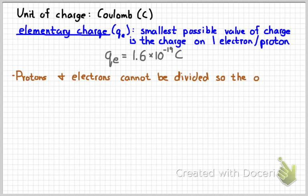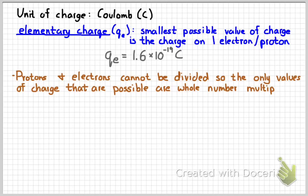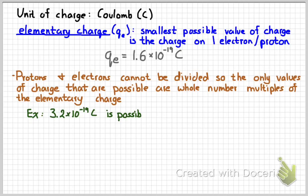Since protons and electrons cannot be divided, you can't have any value of charge that is not a whole number multiple of the elementary charge. For instance, you can't have four and a half protons, so you can't have a charge that is four and a half times the elementary charge. For example, you can have a charge of 3.2 times 10 to the negative 19 coulombs. That would just be two times 1.6 times 10 to the negative 19, or two protons.